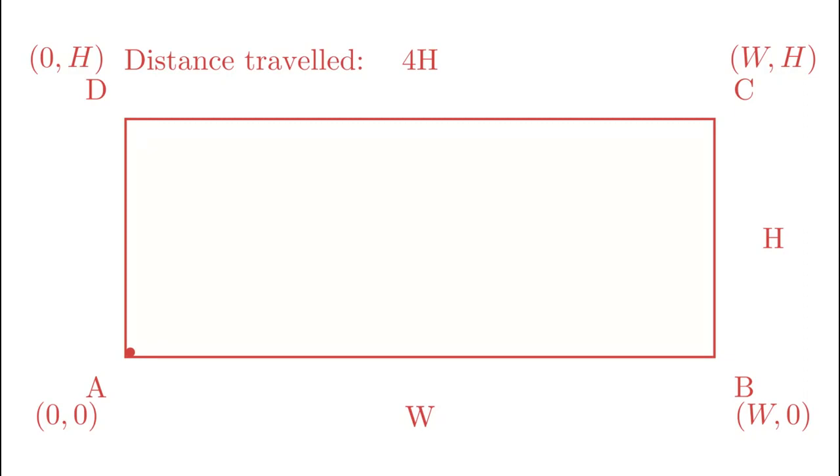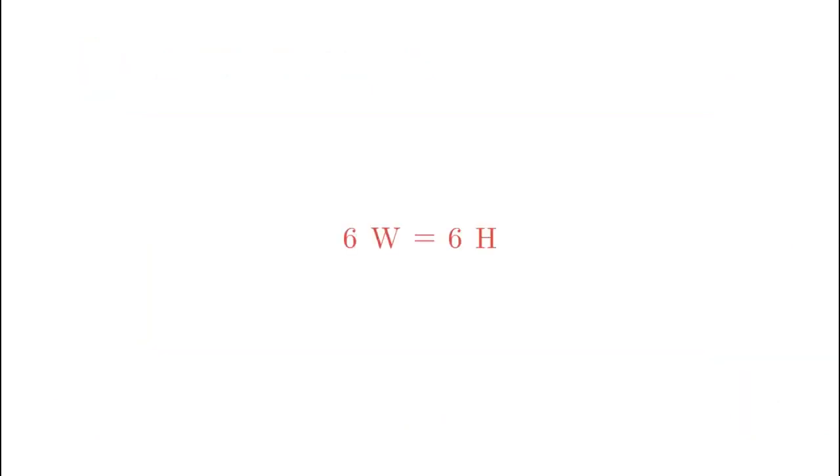Now we can look at both the directions together. Reaching a corner means both the previous cases simultaneously happening. Now since the components of velocity in both the directions are same, distance travelled in both the directions at any instant is also same. So reaching a corner means some multiple of capital W, which is the distance travelled horizontally, must equal some multiple of capital H, which is the distance travelled vertically.